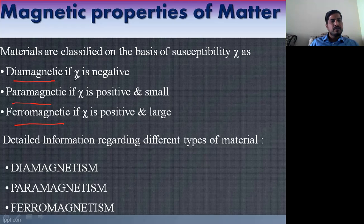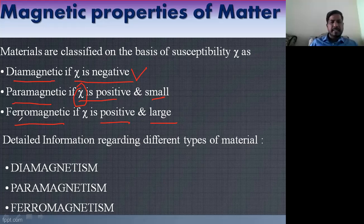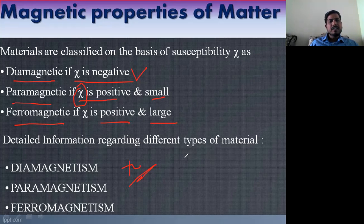Materials are classified based on susceptibility. If the susceptibility is negative, the materials are called diamagnetic. If the susceptibility is positive and small, we call it paramagnetic material. If the susceptibility is positive and large, we call it ferromagnetic material. Susceptibility is a magnetic property related to magnetization.